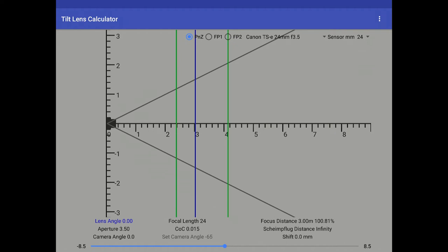Down the bottom, you have nine fields: lens angle, focal length, focus distance, aperture, circle of confusion, Scheimpflug distance, camera angle, set camera angle, and shift. At the bottom of that, you have a blue slider. Now, at the moment, the lens angle is in blue, so the slider is associated with the lens angle.